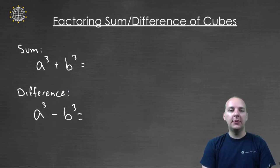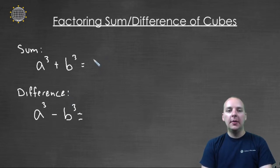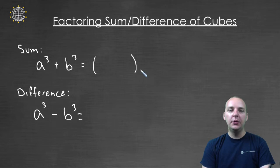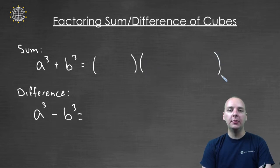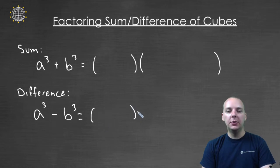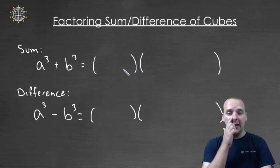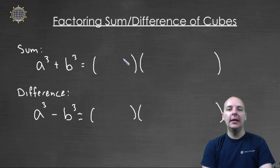So how do these factor? We'll start with the sum of cubes. There's a small set of parentheses that's going to have two terms, and then a larger set of parentheses that's going to have three terms. The same thing is true for a difference of cubes, and matter of fact, they even have the same terms inside.